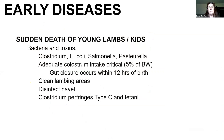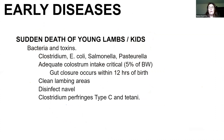Sudden death of young lambs and kids is most often associated with a toxin being released by bacteria — generally the most common ones are Clostridium perfringens type C or tetanus. This is usually environmentally associated, and another reason to have very clean lambing areas and disinfect that navel, because oftentimes bacteria travel up through that open navel area to gain entrance.